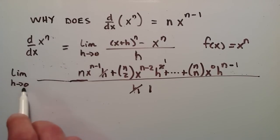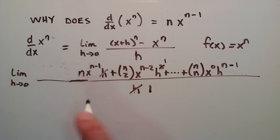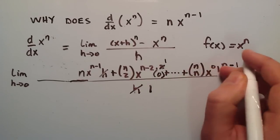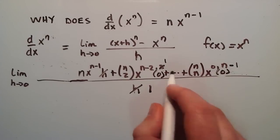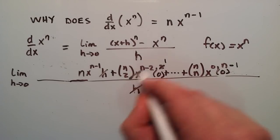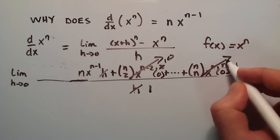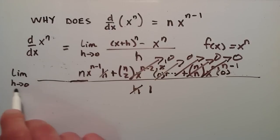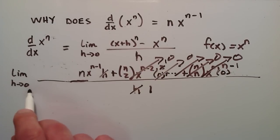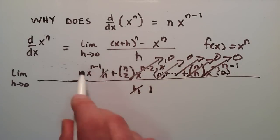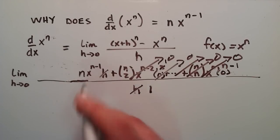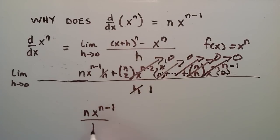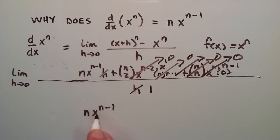Now if we take the limit as h approaches 0, all the remaining h's simply change to 0. The first h term becomes 0, the h at the end becomes 0, and all the terms in between have h's that become 0 — so we have 0 times all that stuff, which is just 0. All of these terms go to 0, and we're simply left with n times x to the n minus 1, divided by 1. Anything divided by 1 is just itself, so this is just n times x to the n minus 1.